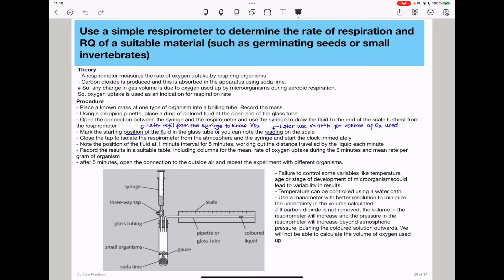You need to know that if carbon dioxide is not removed, the volume in the respirometer will increase. Pressure in the respirometer will increase beyond atmospheric pressure, pushing the colored solution outwards, and we will not be able to calculate the volume of oxygen.